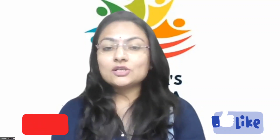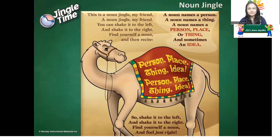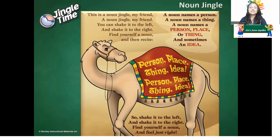Let's get started to see about what is a noun. First we'll look at what is a proper noun and what is a common noun, what color it is, and what actions go with it. Here is a noun jingle: 'A noun names a person, a noun names a thing, a noun names a person, place, things, or idea. Shake it to the left and shake it to the right, find yourself a noun, feel just right.'